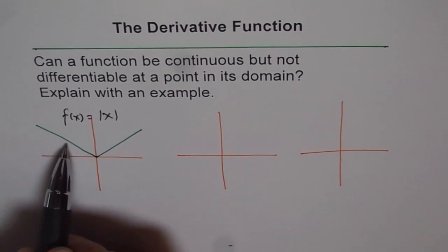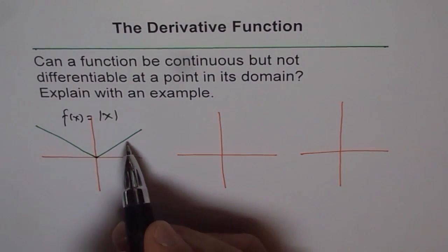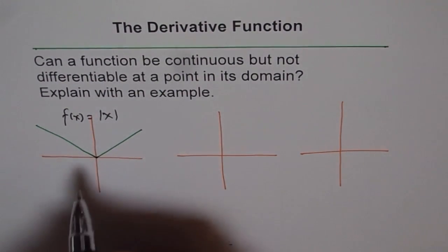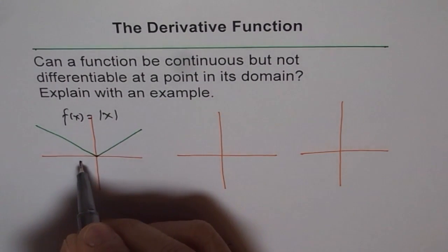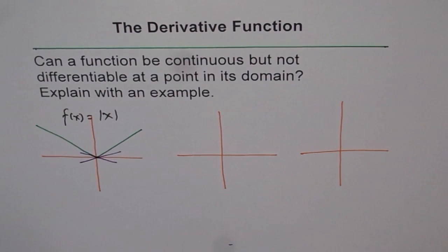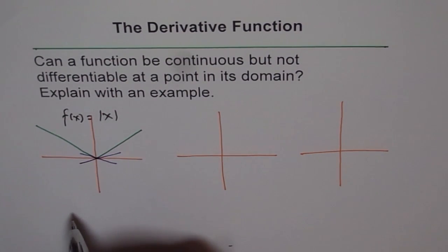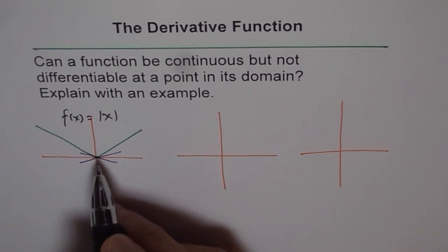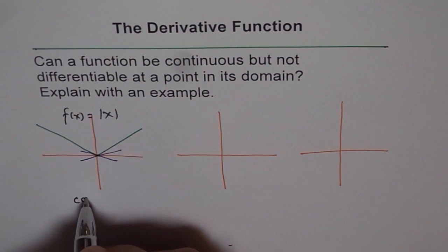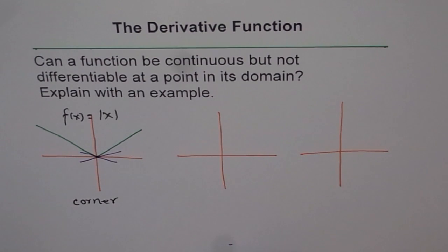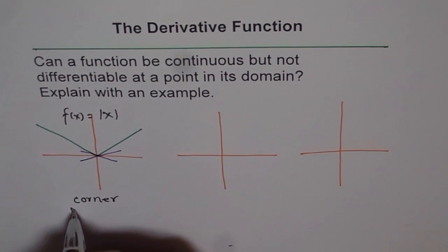If you see from this side, even this line is tangent. If you see from that side, this line is tangent to the function. This line is also tangent to the function. In fact, we can draw so many lines and all could be tangent at that point. But precisely, it is a corner. So at this corner, we cannot specifically say that this is the tangent, and therefore it is not differentiable at this point. So you will note in any function, if you see the graph and you find a corner, then it is not differentiable.